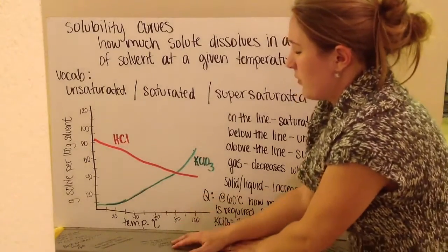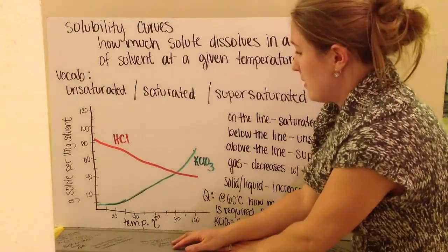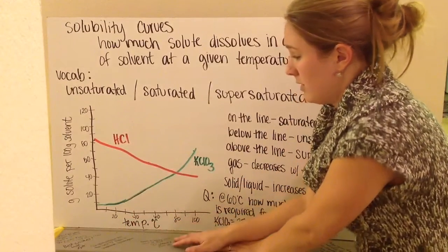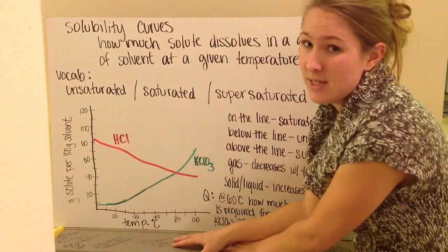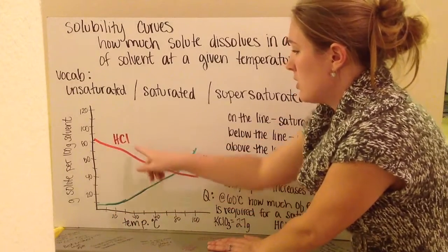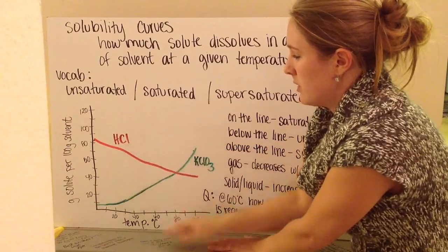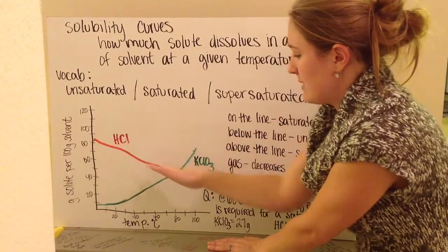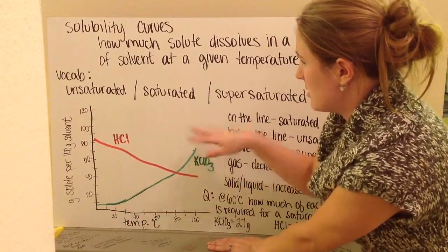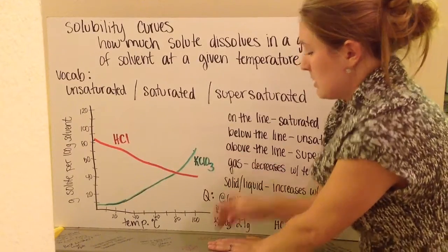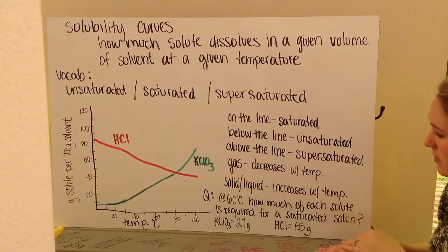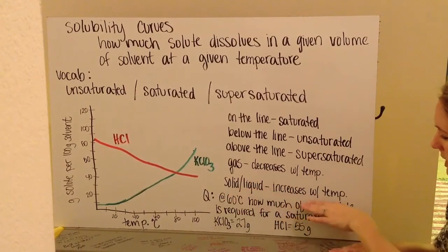We talked about before the relationship between temperature and that as we decrease our temperature, our solubility increases for gases. So, therefore, as I increase my temperature, my solubility will decrease. So, that tells me that my HCl is really a gas because my solubility curve is decreasing. Which, therefore, since my potassium chlorate is increasing, the solubility is increasing with temperature, that tells me that this must be a liquid or solid. So, again, gases will decrease with temperature, a solid or liquid will increase with temperature.